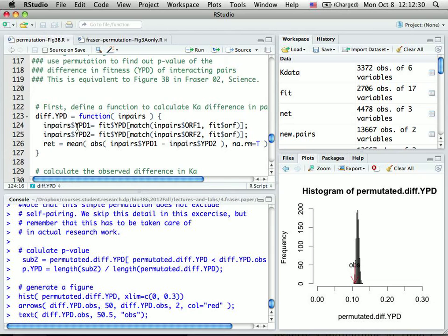So I first use a match function. I match the first operating frame to the fitness ORF members, and then based on the matching position, I put the fitness YPD assigned to the first genes in the interacting pairs. I do the same thing for the second ORF in the input pairwise interactions.